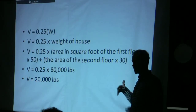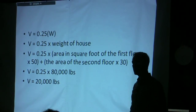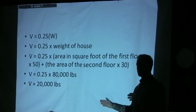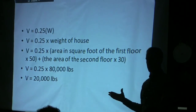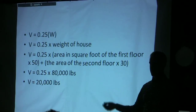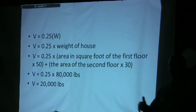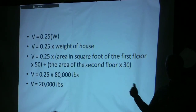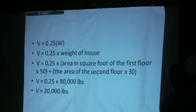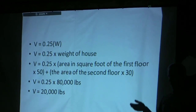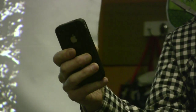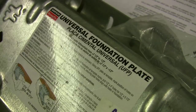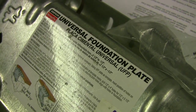The house we just looked at is 1,000 square feet on each floor. Each floor weighs about 30 pounds per square foot. The roof weighs about 20 pounds per square foot. If the second floor isn't as large as the first floor, you need to account for the roof load. So with 1,000 square feet of roof and 1,000 square feet of main floor, we get a total weight and multiply it by 0.25. So 0.25 times 80,000 pounds gives us 20,000 pounds. We end up with eight of these connectors on each wall.